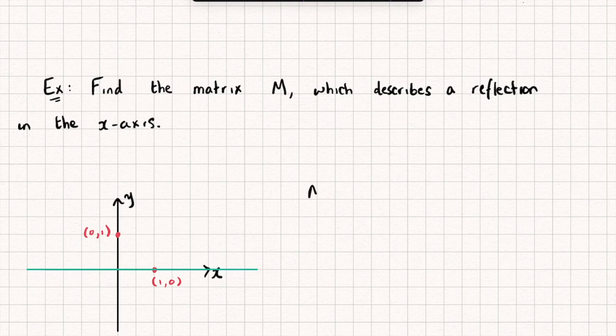Well the point (1,0), that's just going to stay at (1,0). It's not going to move. So the first column is going to be (1,0).